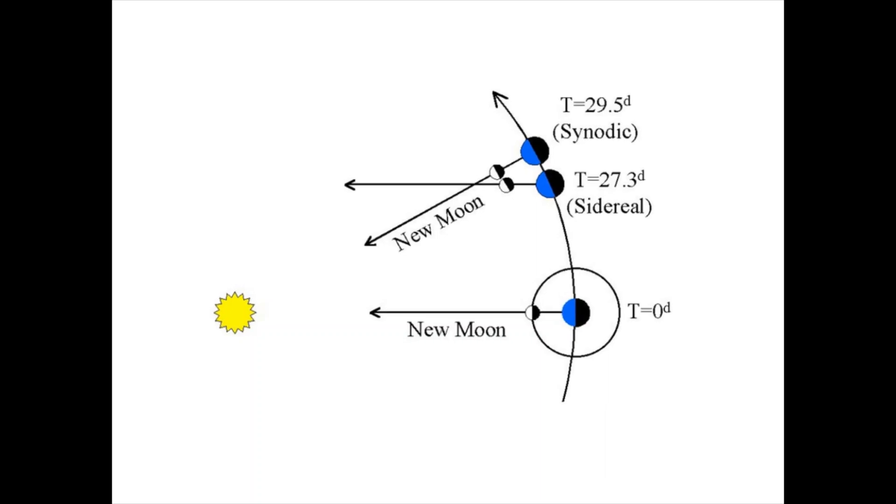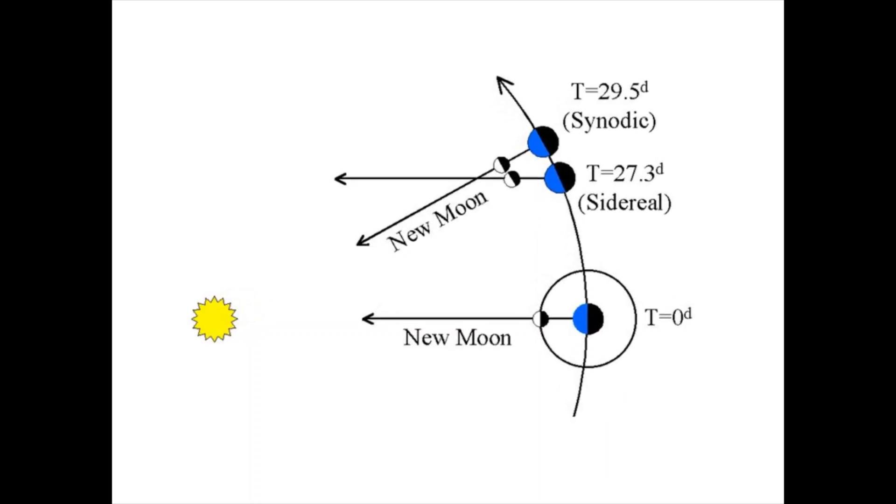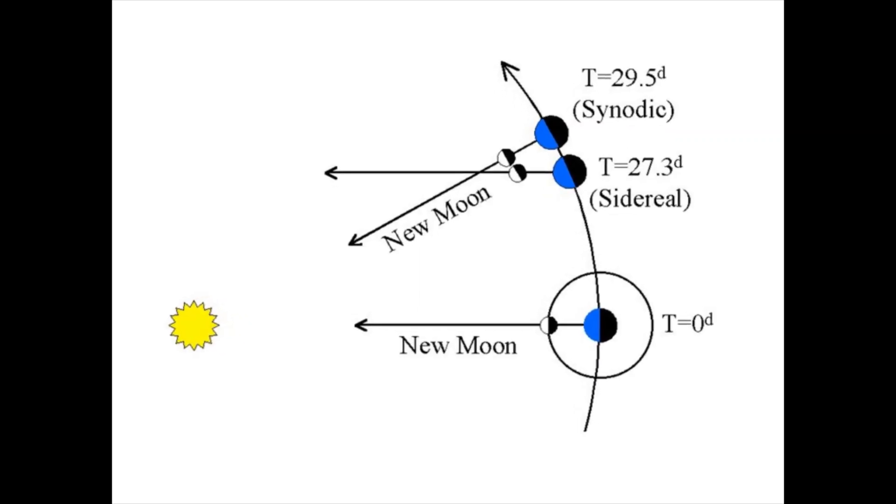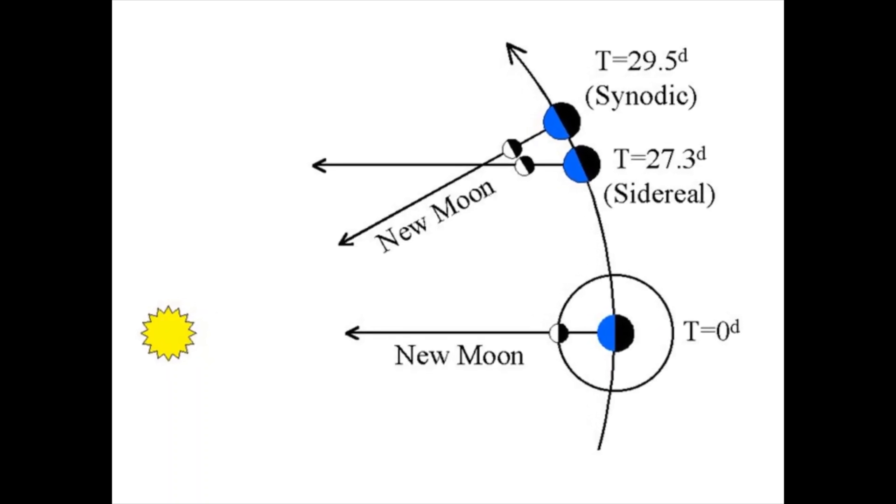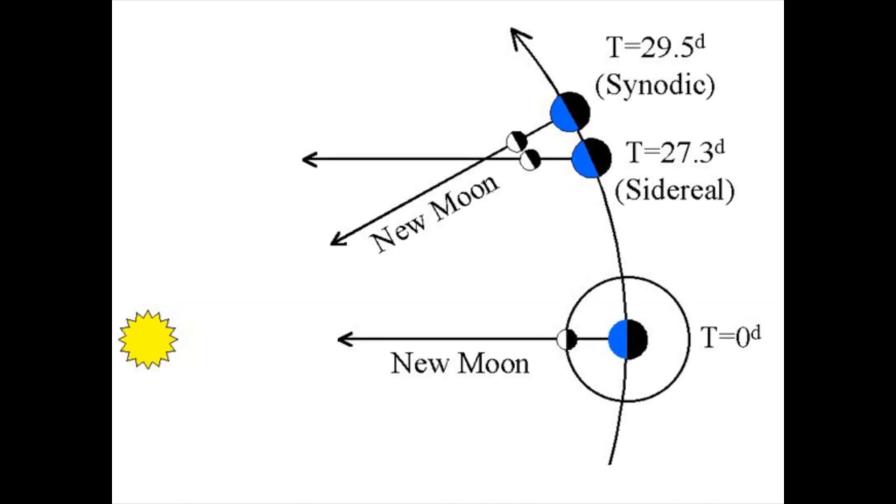The Moon completes one revolution relative to the fixed stars in about 27.32 days, which is called a sidereal month. The Moon completes one revolution relative to the Sun in about 29.53 days, which is called a synodic month.